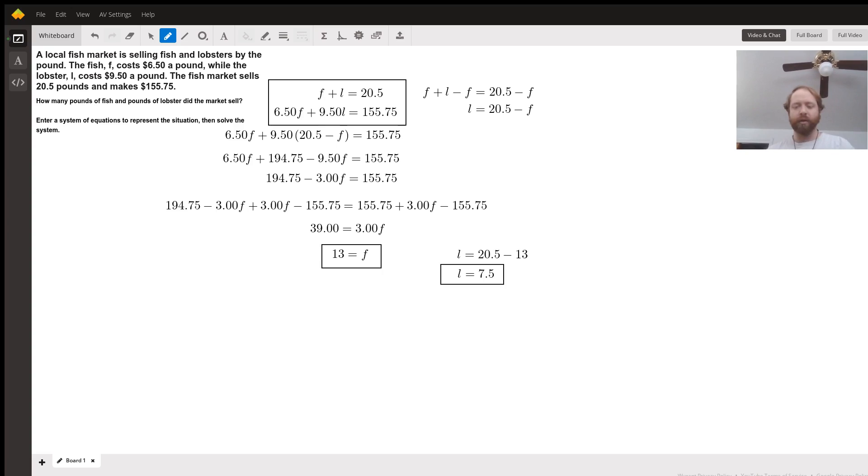We can go ahead and pull out a calculator and just make sure that works out for us. So $6.50 times 13 pounds gives us $84.50. 7.5 times $9.50 a pound gives us $71.25.